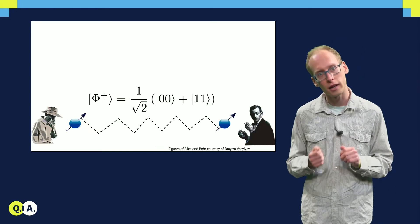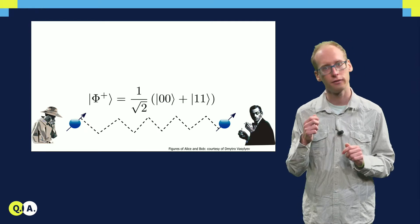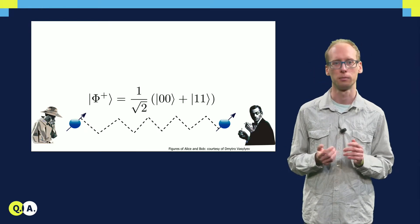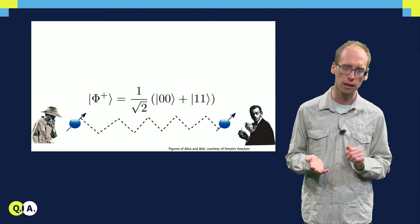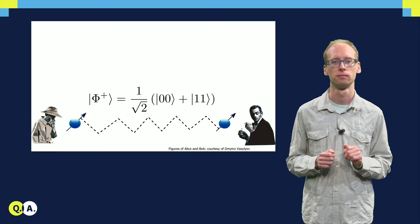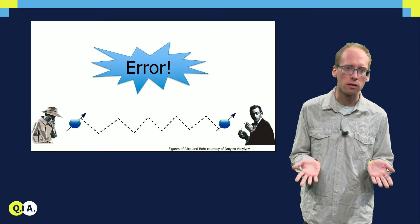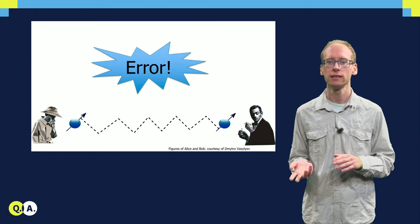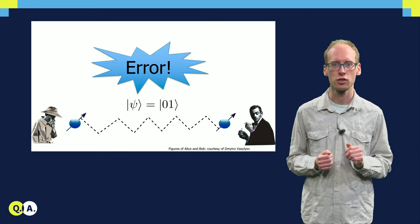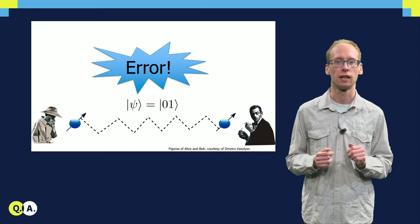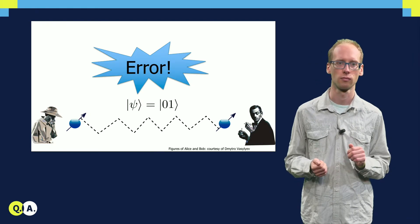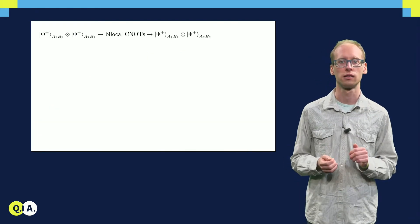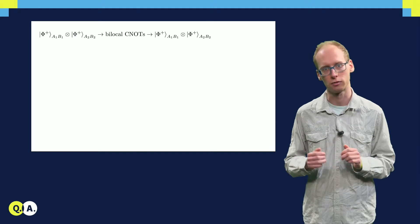Let us now consider a very specific distillation example for a very specific type of noise in the system. In particular, let us assume that Alice and Bob want to generate the state phi plus, as shown on the slide. Unfortunately, from time to time an error occurs, in which case Alice and Bob unknowingly share the state psi, which is an unentangled product state that is orthogonal to the desired maximally entangled state phi plus. Let us now go through the distillation procedure on the two copies of such a state as described before.